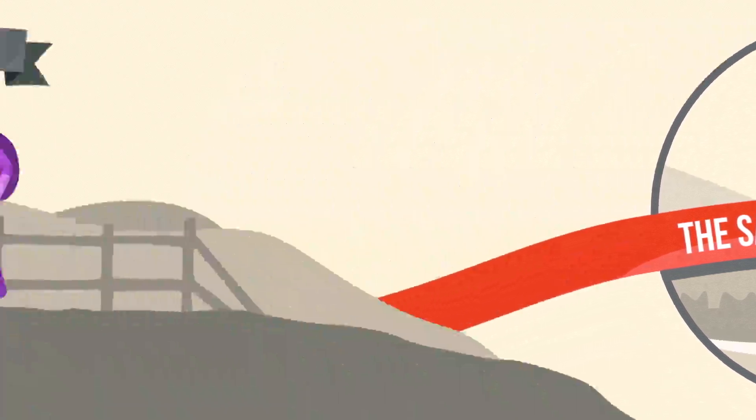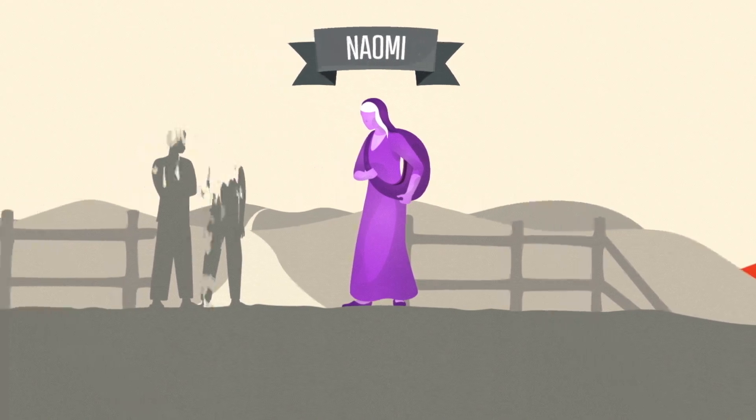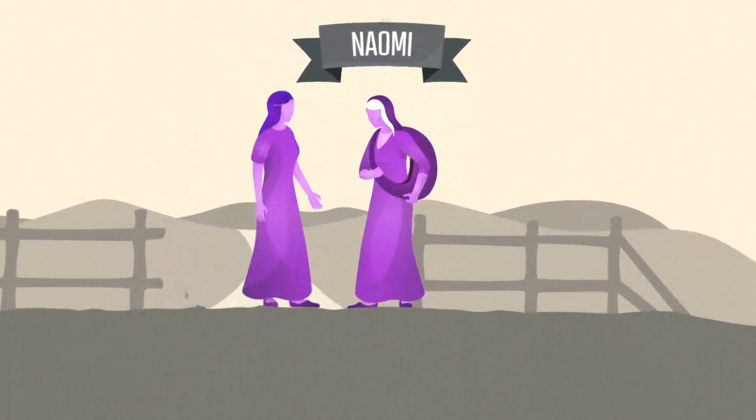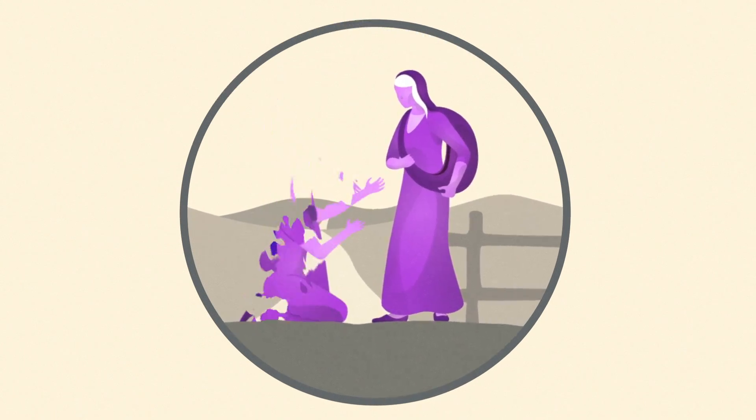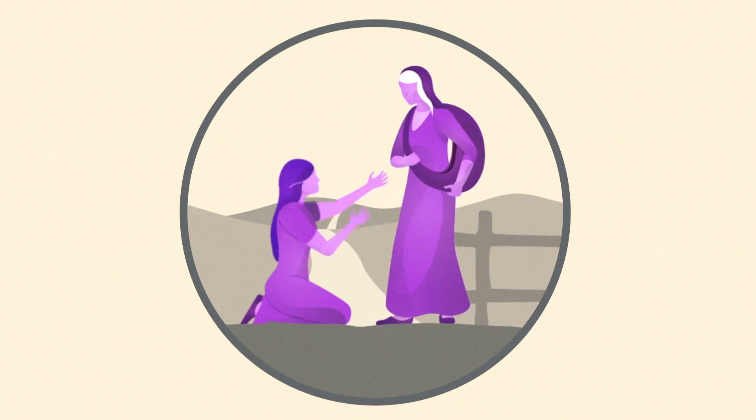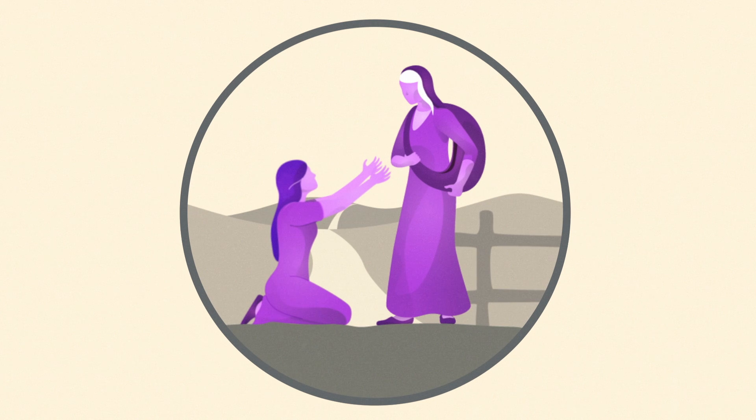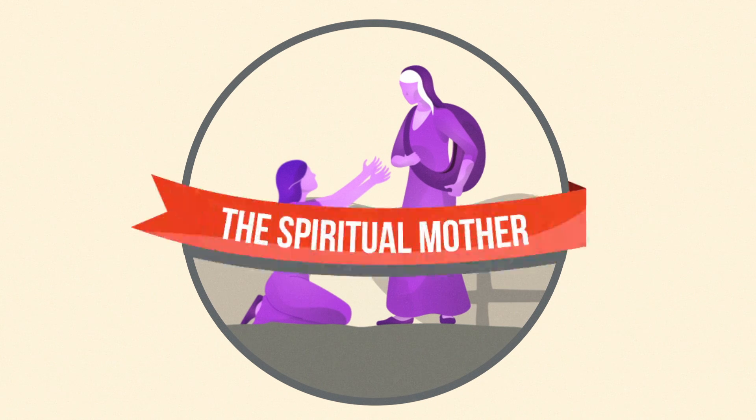Naomi was a mother who experienced the loss of her sons. Yet she gained a daughter in Ruth, who declared, 'Where you go, I will go. Your people will be my people. Your God, my God.' Naomi and Ruth became family by faith.